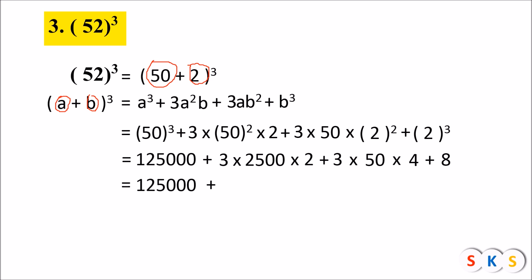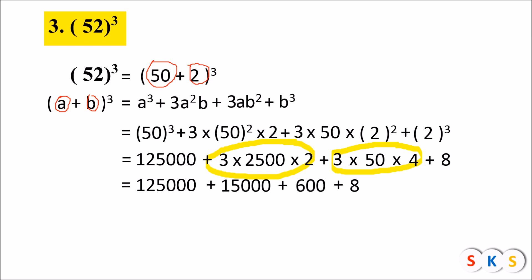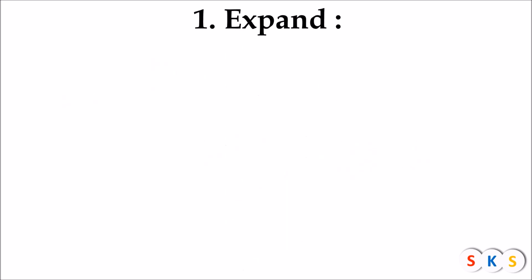Now multiplying: 3 × 2500 × 2 = 15,000; and 3 × 50 × 4 = 600; plus 8. Adding: 1,25,000 + 15,000 + 600 + 8 = 1,40,608. Therefore the cube of 52 is 1,40,608.